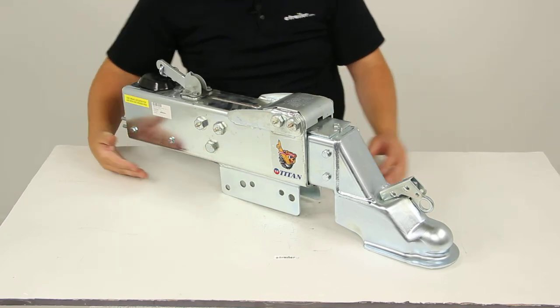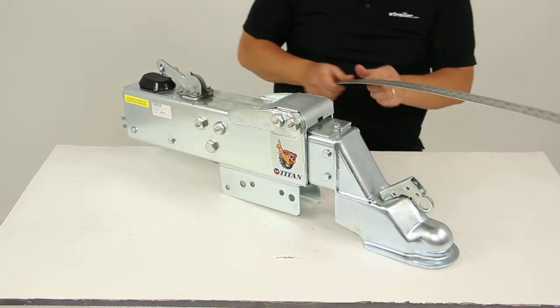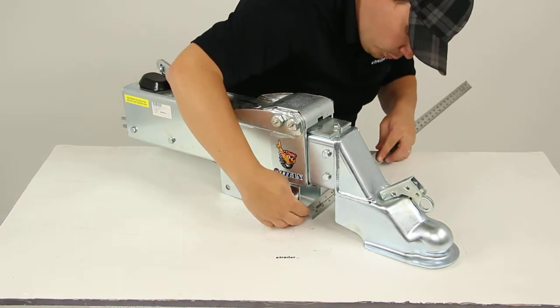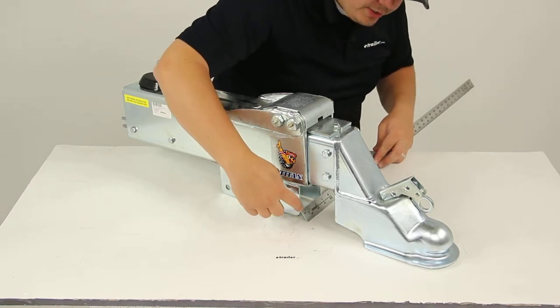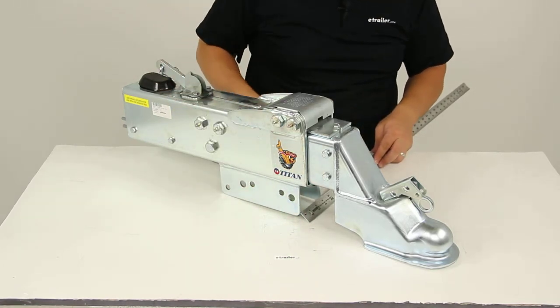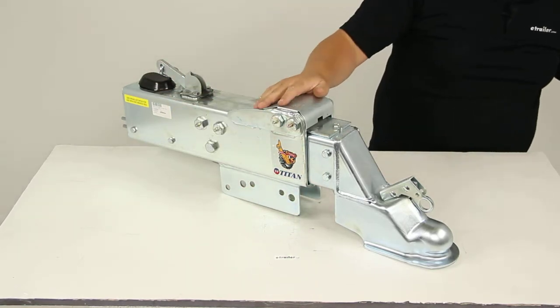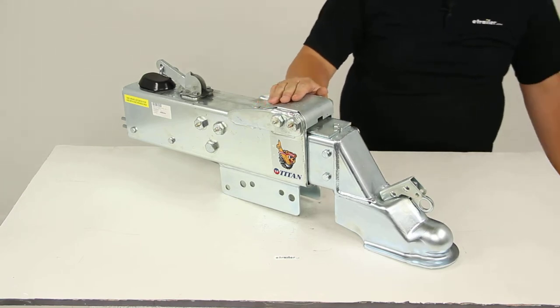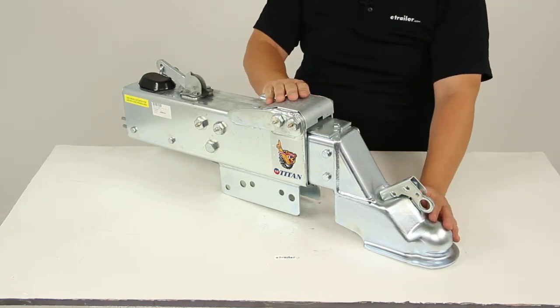Down here for our mounting, this is designed to fit channel widths that measure three inches, so we have three inches in between our channel there. It is going to offer us a gross weight capacity of 20,000 pounds, with a maximum tongue weight of 2,000 pounds.